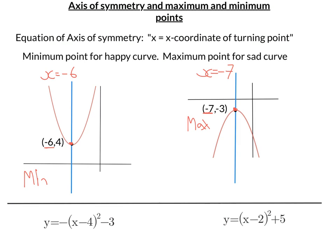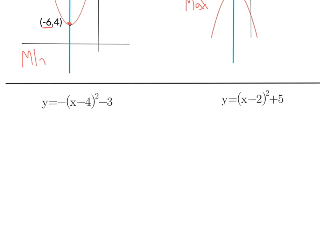Let's have a look at these two equations. We've got to find the axis of symmetry, the equation of it, and whether it's a maximum or min point. The axis of symmetry equation is x equals the x-coordinate of the turning point. So let's find the turning point.